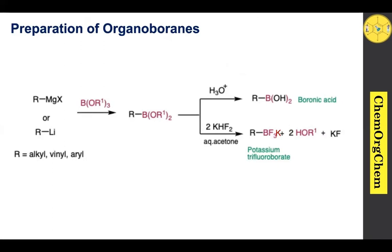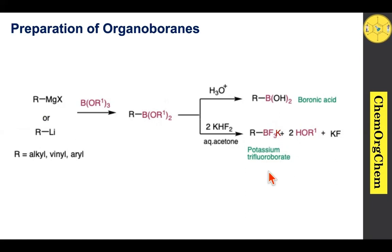Let's see how to prepare organoboranes, since competitive exam papers often ask about preparation of organoboranes followed by their Suzuki coupling reactions. One method: a Grignard reagent or organolithium species reacts with a borate to produce the corresponding organoboronate species. Acid workup produces the boronic acid. Treatment with potassium bifluoride produces potassium trifluoroborate. Potassium trifluoroborate is highly useful compared to boronic acid, since boronic acids are associated with purification and storage issues.